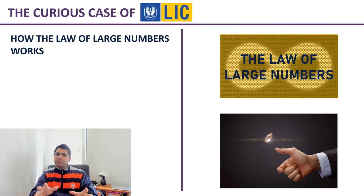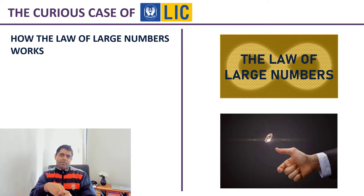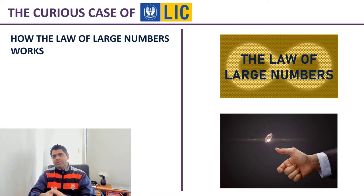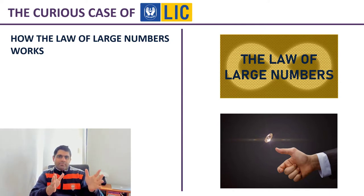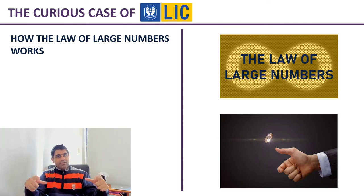Now, instead of tossing once, let's say I toss the coin 10 times. And I want to find out how many times I would get heads and how many times I would get tails. Based on the probability, don't you think I should get heads five times and tails five times? Because the probability is 50%, and I'm going to toss 10 times — so 50% of 10 gives five heads and five tails.